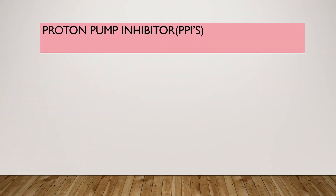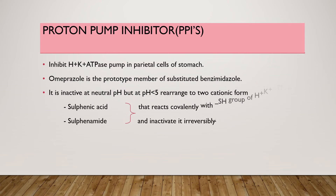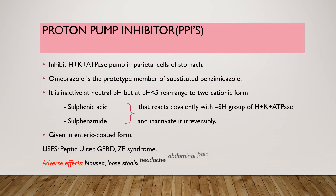Next are proton pump inhibitors. As the name suggests, they inhibit the proton pump or H+/K+ ATPase in the parietal cells of the stomach. Omeprazole is the prototype member of the substituted benzimidazoles. It is inactive at neutral pH, but when the pH is less than 5, it rearranges to two cationic forms — sulfenic acid and sulfonamide — which react covalently with the sulfhydryl (thiol) groups of the proton pump and inactivate it irreversibly. These proton pump inhibitors are given in enteric-coated form because they are weak bases and can be destroyed by gastric acid.